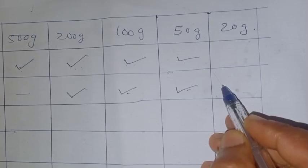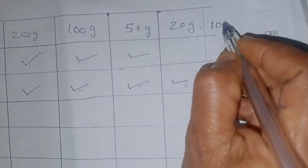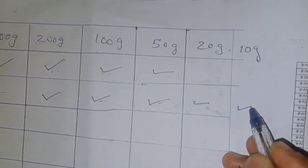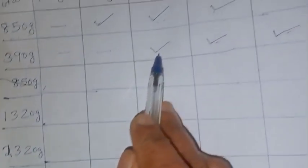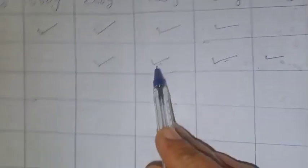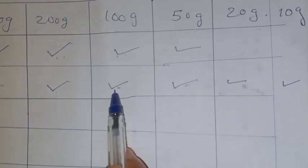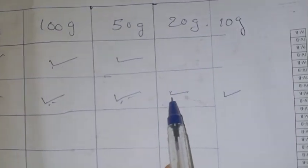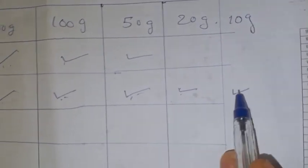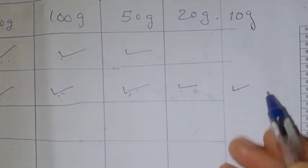Then 320 also. Then we will be getting 110. 10 gram also here. Then we can take that also. Then 200 plus 100, 300, 350, 370. And 380. Then we can change it as 380.